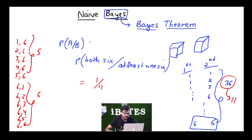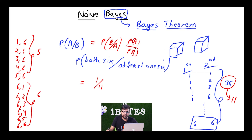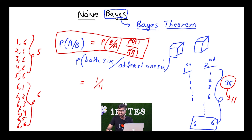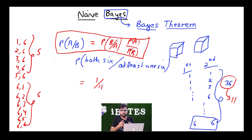There is another theorem — Bayes theorem — which will help us solve this. The theorem states: P(A given B) = P(B given A) × P(A) / P(B). This is the formula for Bayes theorem. We have already solved our LHS, P(A given B). Now let's verify if the RHS also gives us the same answer of 1/11. In the next session, I will discuss what 'Naive' exactly means and how Bayes theorem can be used in machine learning, in our Naive Bayes algorithm.